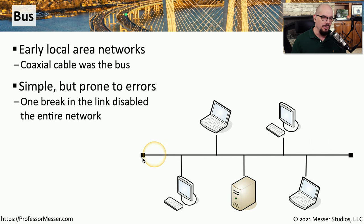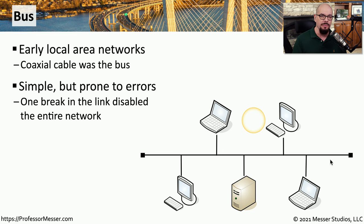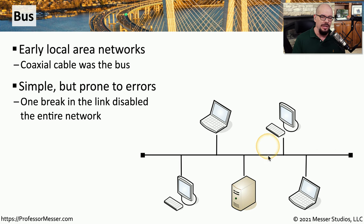One problem with bus networks is that it is a single cable that is running either through the walls or down the center of the room. And if we happen to have a break in this cable, it would suddenly segment the network into different pieces, or in some cases, cause no data to be transferred across the network. That's one of the reasons we moved away from bus networks for our local area networks, because one single disconnect could cause an outage for everybody else on the network.